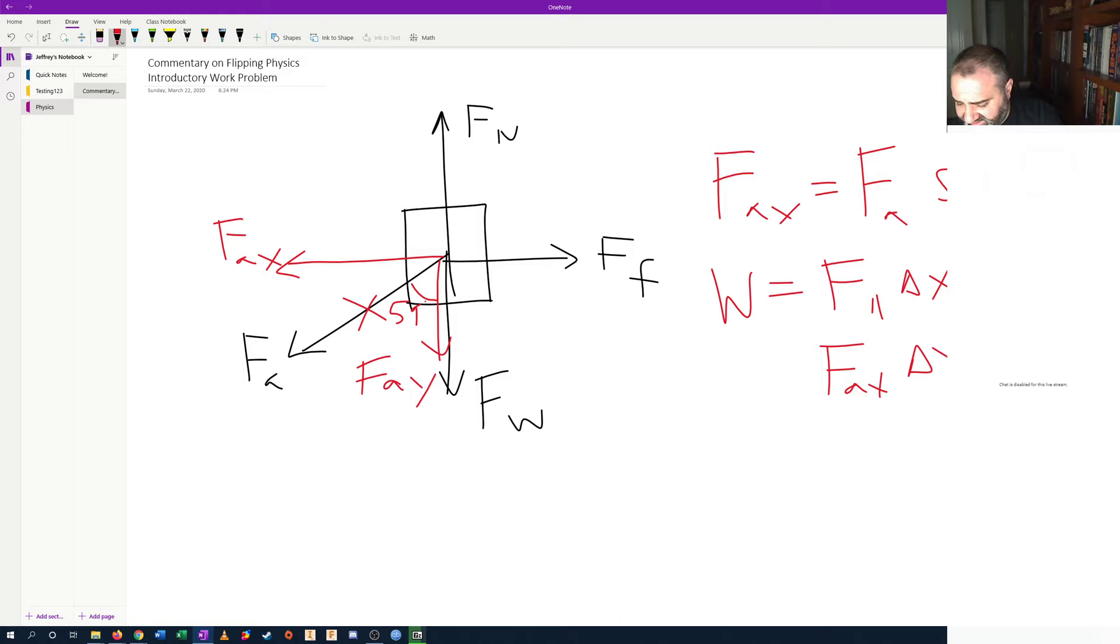And so this is 6.9 times the sine of 59 degrees times 7. Oh, look, we get the same 41 joules that they do on the problem.